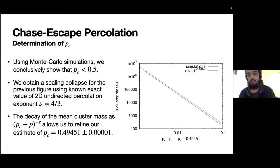We can refine our estimate of pc by using the power law decay of cluster mass near pc. Using this power law decay, we were able to refine our estimate and give our best estimate of pc. I'd like to again point out that γ here, that gave the best linear fit, was again in agreement with the 2D undirected percolation class.